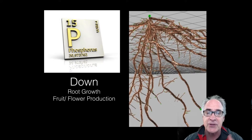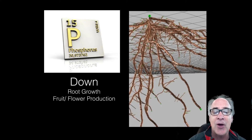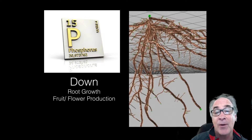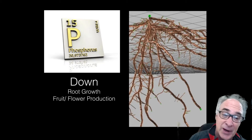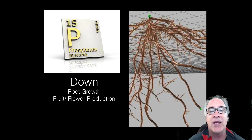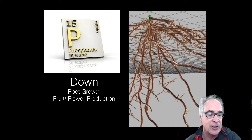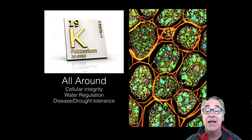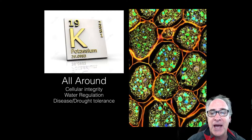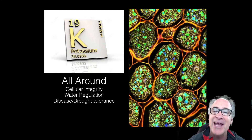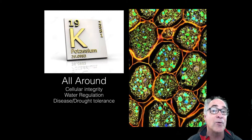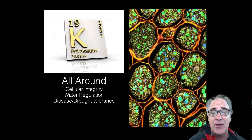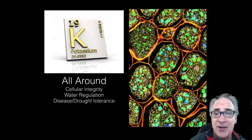Down or beneath the surface is potassium. Potassium encourages root growth and also fruit and flower production, so it helps with reproduction in the plant as well as root development. So phosphorus is down. And then K — the 'all around' — potassium K helps support cellular integrity. It also helps with water regulation within plant cells. Because of that, it helps the plant become more disease and in particular drought tolerant, because of that water regulation component.